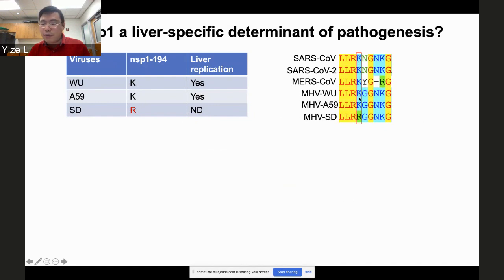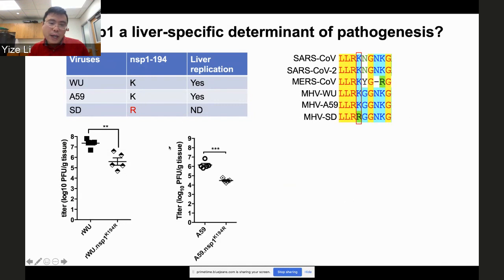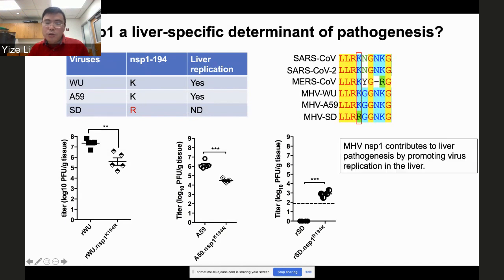Using reverse genetics, we mutated K to R in the WA59 strain: wild-type virus replicated very well in the liver but the mutant was attenuated. Similarly for A59 — wild-type replicated well but the K→R mutation attenuated replication. Interestingly, when we mutated the arginine back to lysine in the SD virus, we could partially restore liver replication. We conclude that Nsp1 contributes to liver pathogenesis by promoting viral replication.